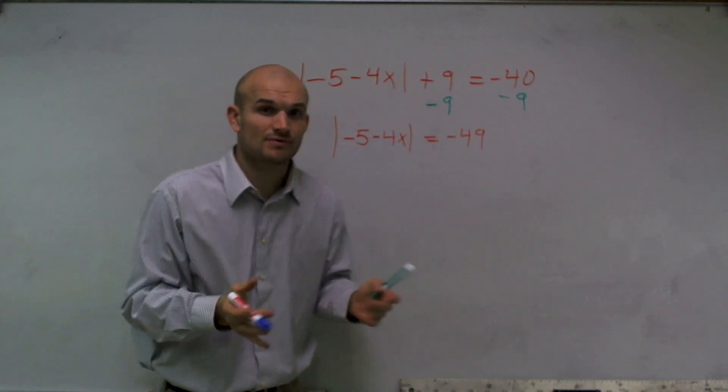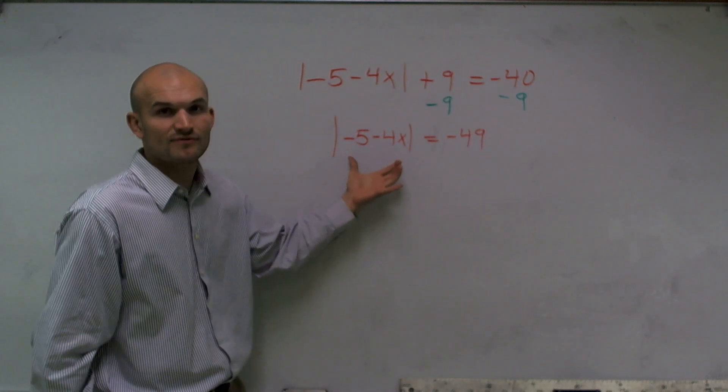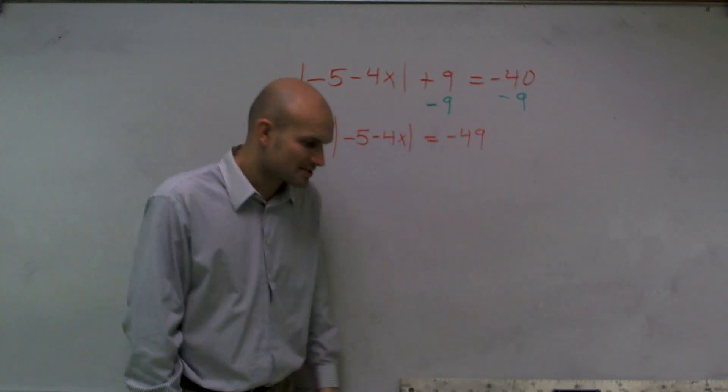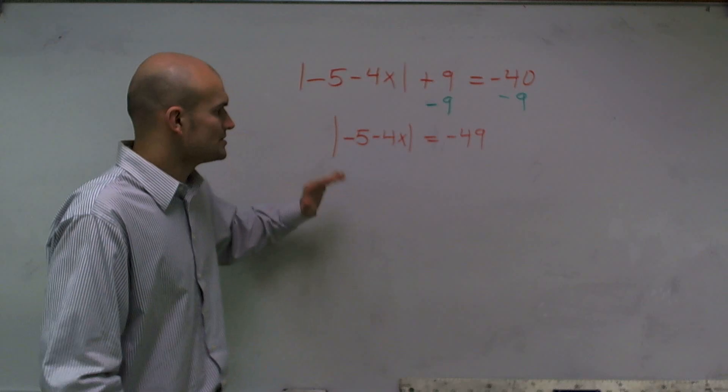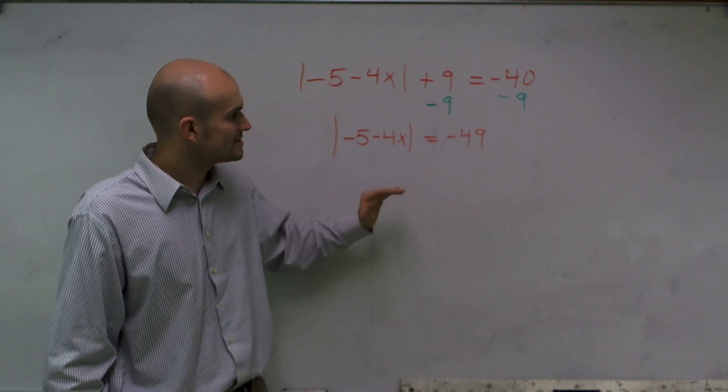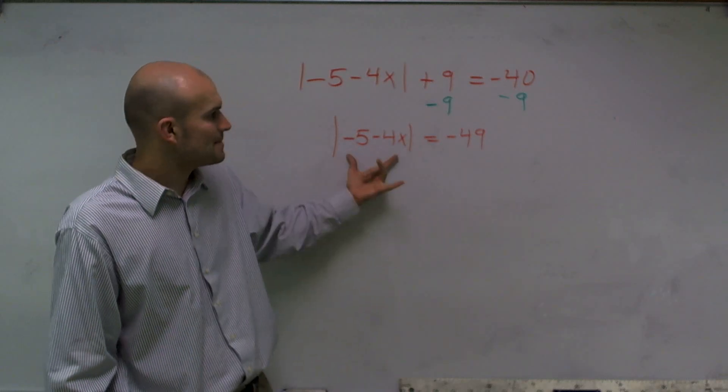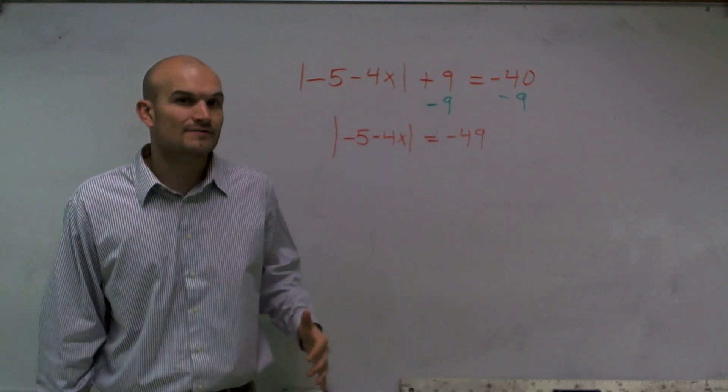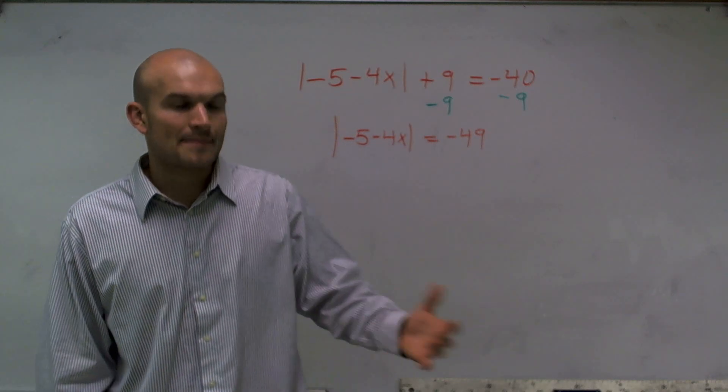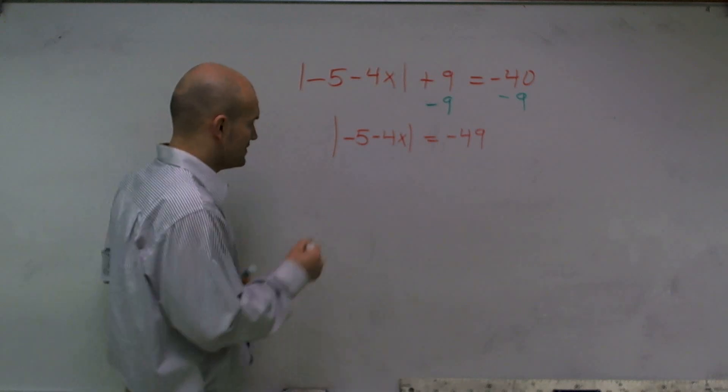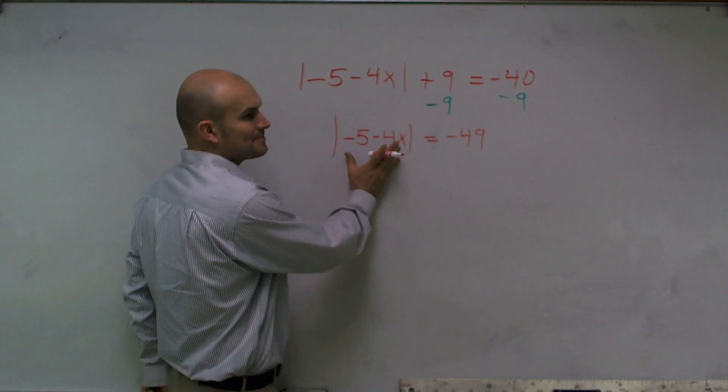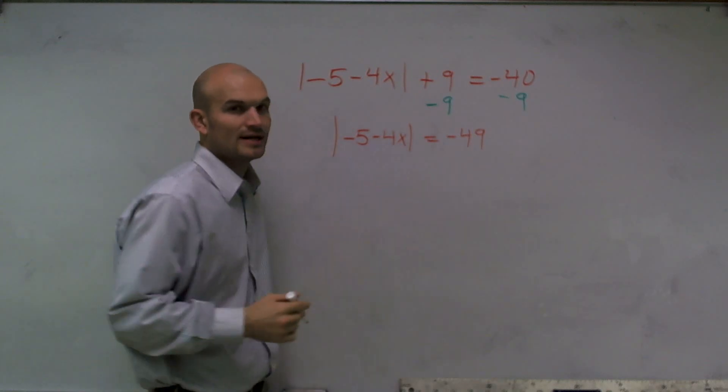Now, from here, in other cases what I've shown is we can take our absolute value and set this equal to our positive and our negative value of our answer. Well, a problem that we see right here is I'm having the absolute value of some number—we don't know what x is—equals a negative number. And that becomes a problem because if we look at it, you cannot have the absolute value of something equal a negative number, right?